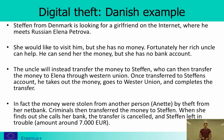What he doesn't know is that the money were actually stolen from another Danish person, Annette, by theft from her net bank. The criminals transferred the money from Annette's account to Stefan's account — a traceable transaction. Stefan then took out the money and transferred them via Western Union, a non-traceable transaction, to whoever is placed in Russia. Of course, Stefan never sees his money again.